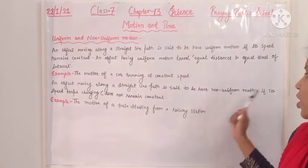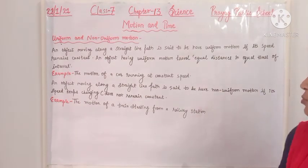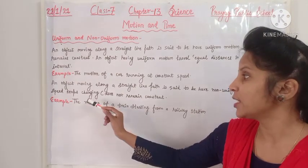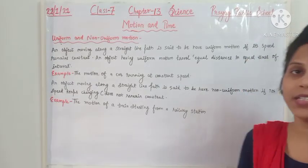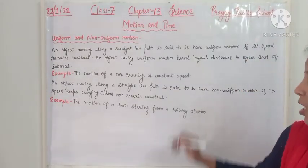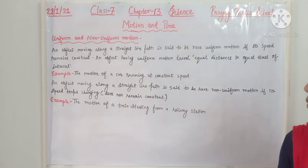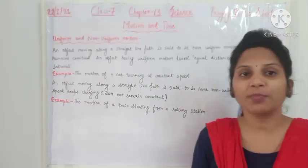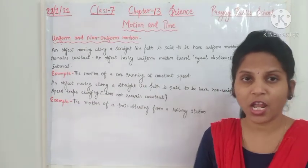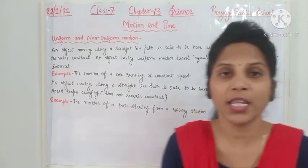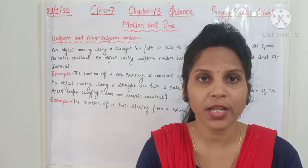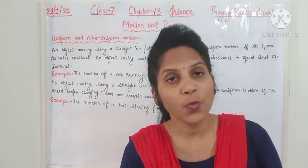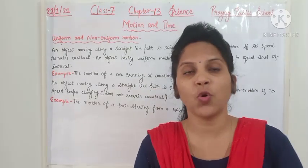Non-uniform motion: an object moving along a straight line path is said to have non-uniform motion if its speed keeps changing — it does not remain constant. When an object moves in a straight line path and its speed is not constant, sometimes it increases and sometimes it decreases — we call this non-uniform motion.